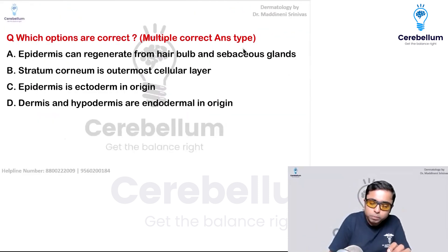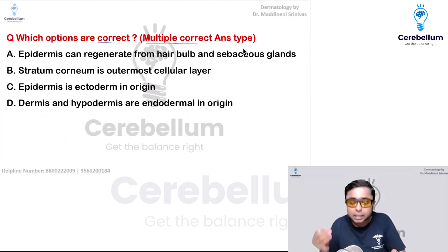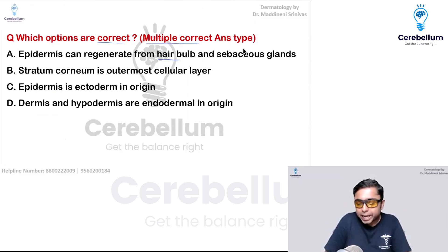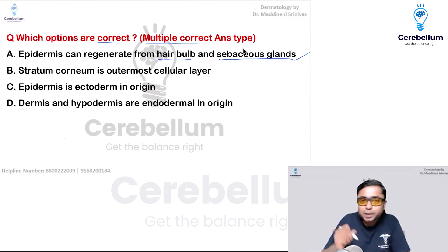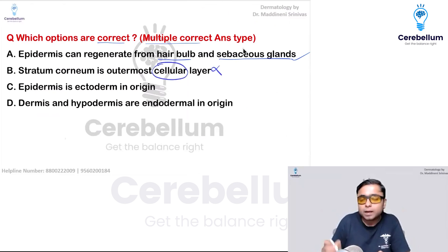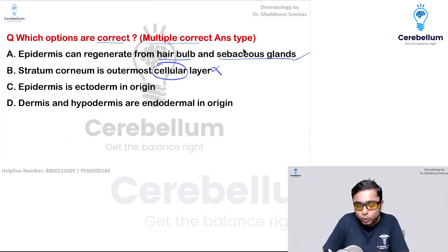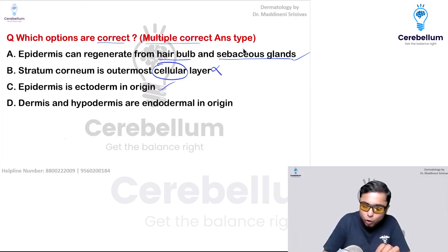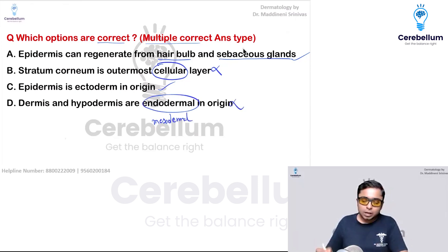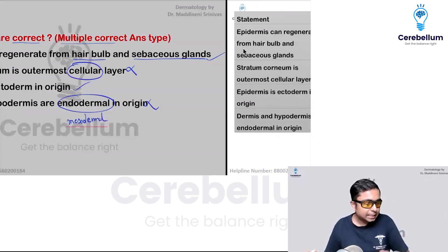The next question asks you to identify correct statements about the epidermis — again a multiple correct answer type. Statement: epidermis can regenerate from hair bulb and sebaceous glands — this is correct because stem cells are present there. Stratum corneum is the outermost layer — correct, but calling it cellular is wrong because stratum corneum is a dead, acellular layer. Epidermis is ectodermal in origin — correct. Dermis and hypodermis being endodermal in origin — wrong; they are mesodermal. So the answers are options A and C.